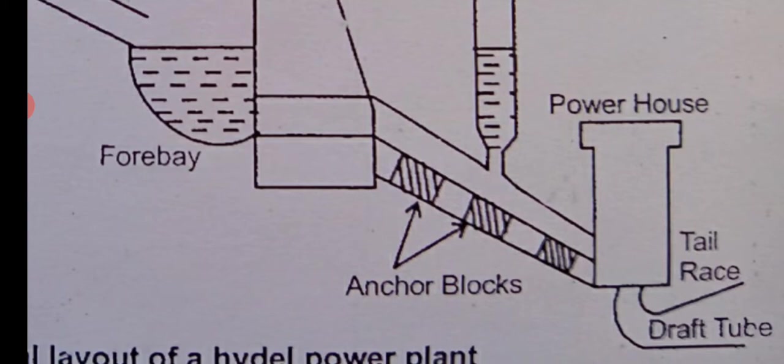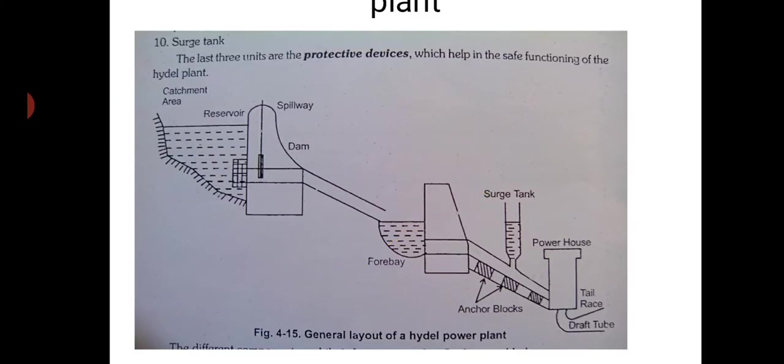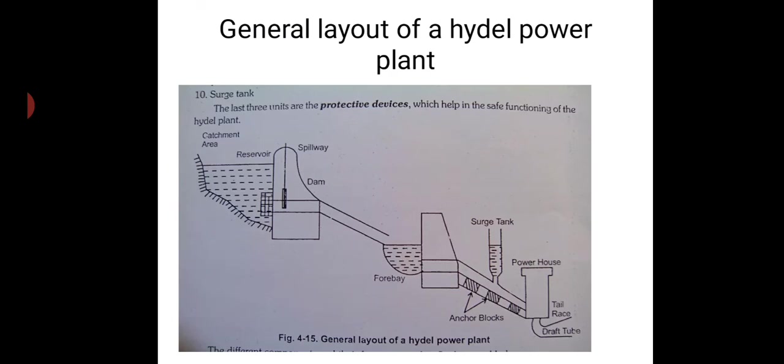The draft tube connects the powerhouse to the tail race. For reaction turbines like Kaplan turbine and Francis turbine, they should always be submerged in water so that water will flow, because pressures are very much reduced there. That is why the draft tube is designed in a conical nature, where the volume goes on increasing towards the tail race end. This is the general layout of a hydro power plant.